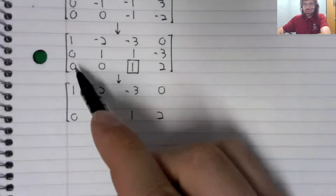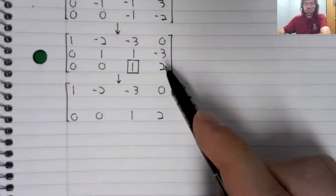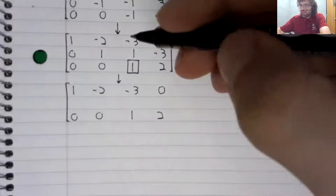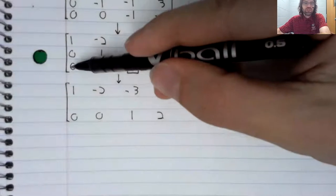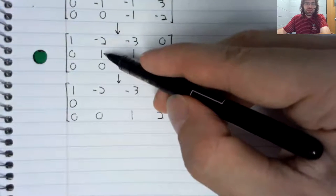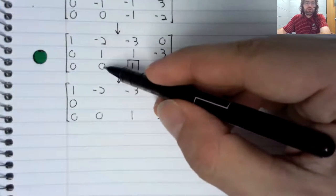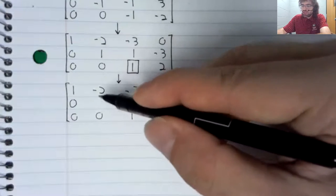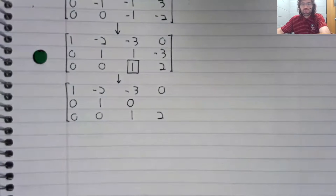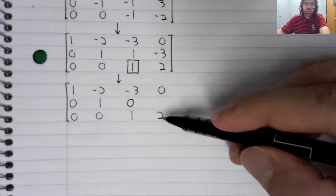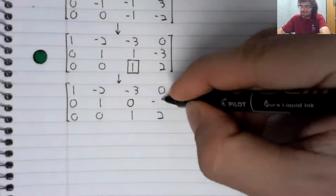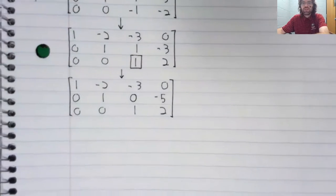And when we multiply this third row by negative one, notice that this zero and this zero remain zero. So zero times negative one is zero plus zero. This doesn't change, and this doesn't change. Zero times negative one is zero plus one is one. This turns to zero. Negative two times negative one is negative two plus negative three equals negative five.